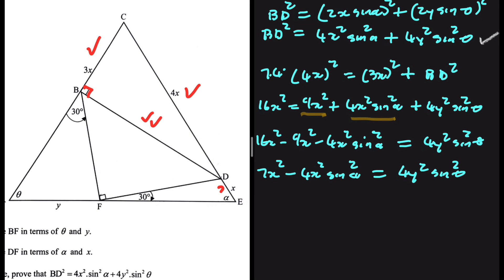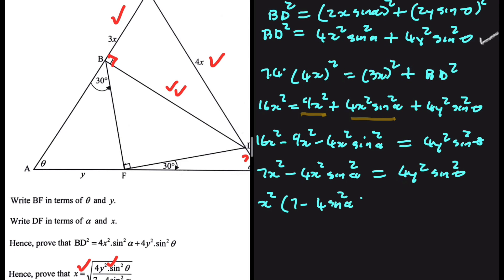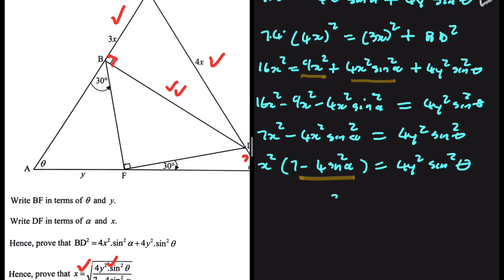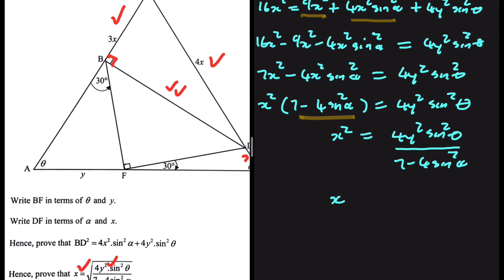On the left-hand side, taking X squared as a common factor, we get X² times (7 minus 4 sin²α) equals 4Y² sin²θ. Dividing both sides by (7 minus 4 sin²α), we get X² equals 4Y² sin²θ divided by (7 minus 4 sin²α). Taking the square root on both sides, X equals the square root of 4Y² sin²θ divided by (7 minus 4 sin²α).